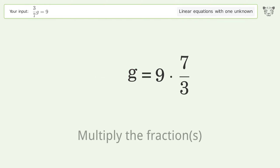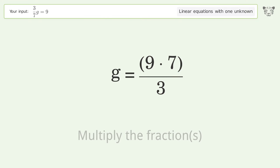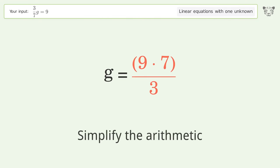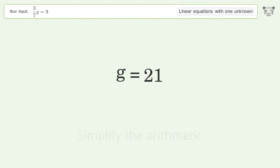Multiply the fractions, simplify the arithmetic, and so the final result is g equals 21.